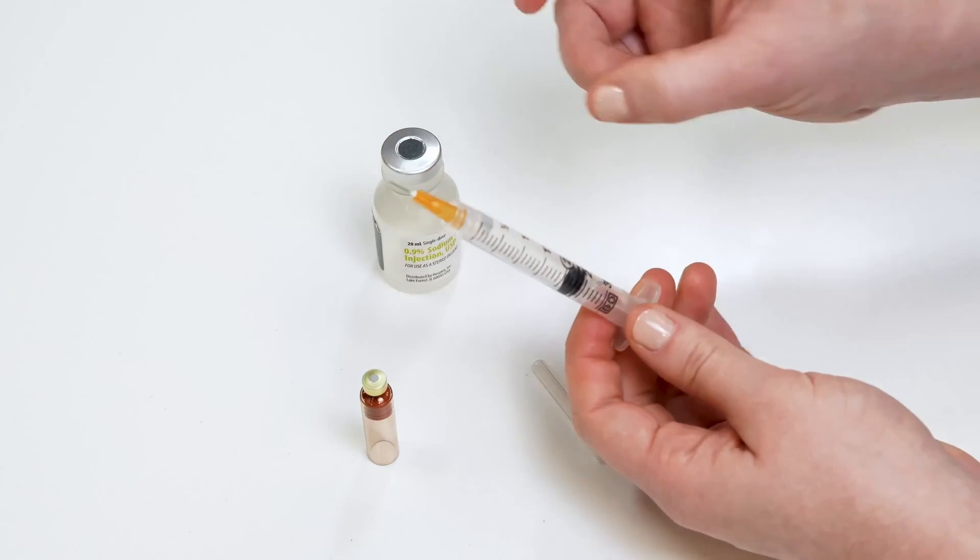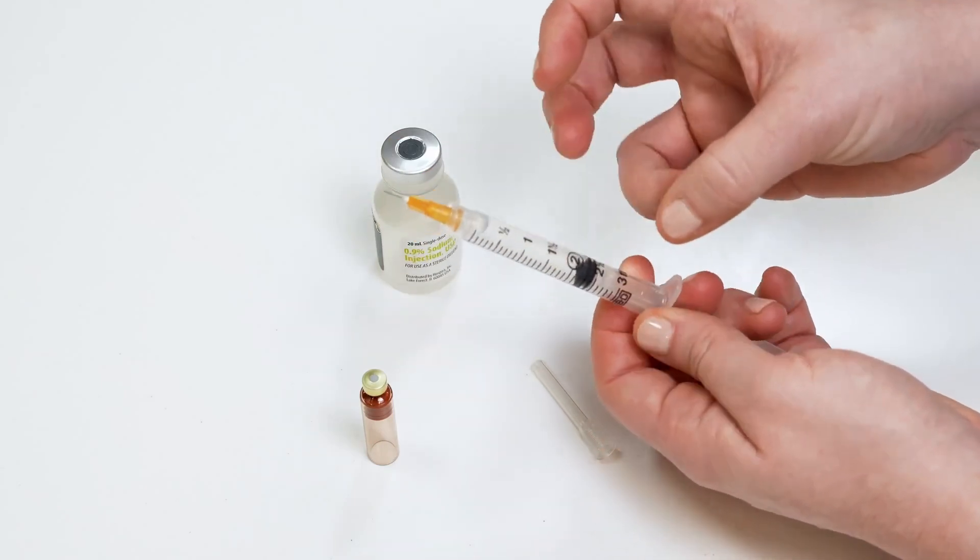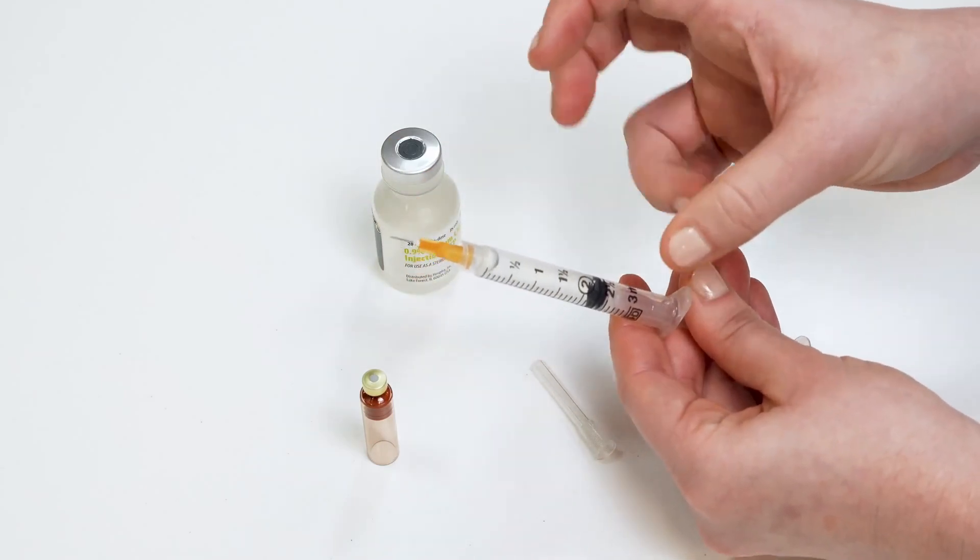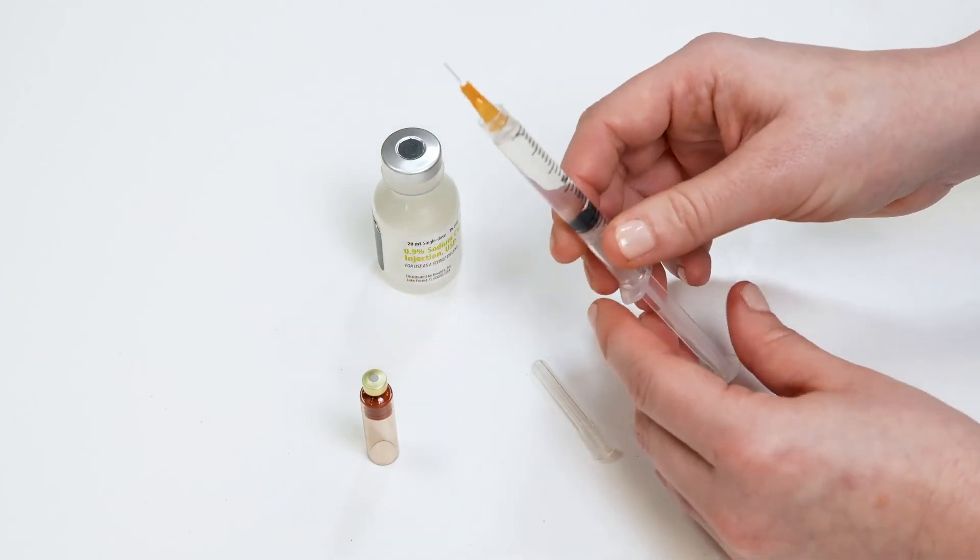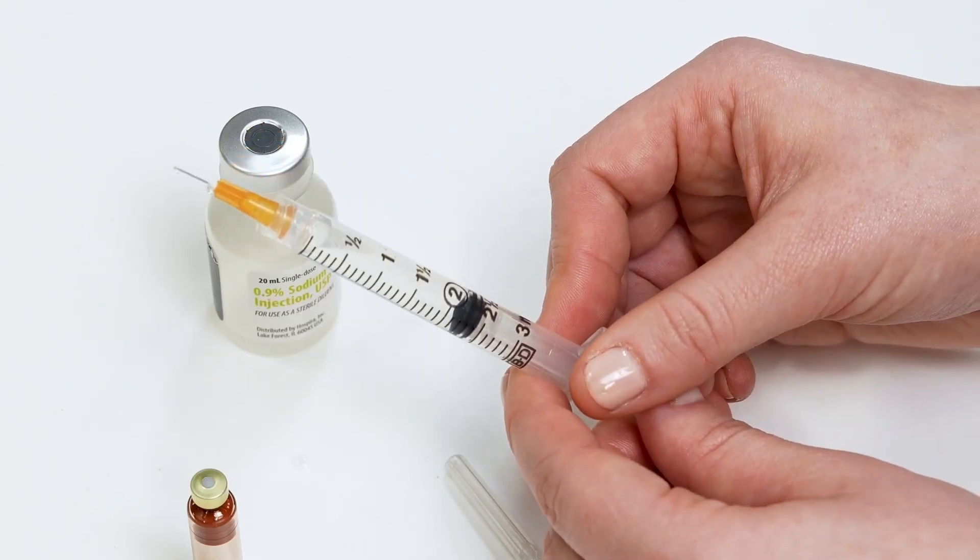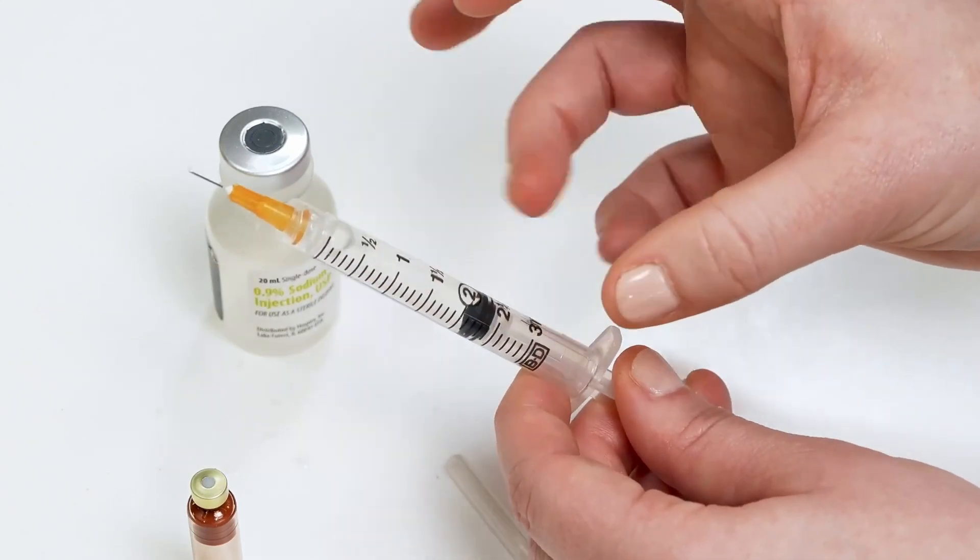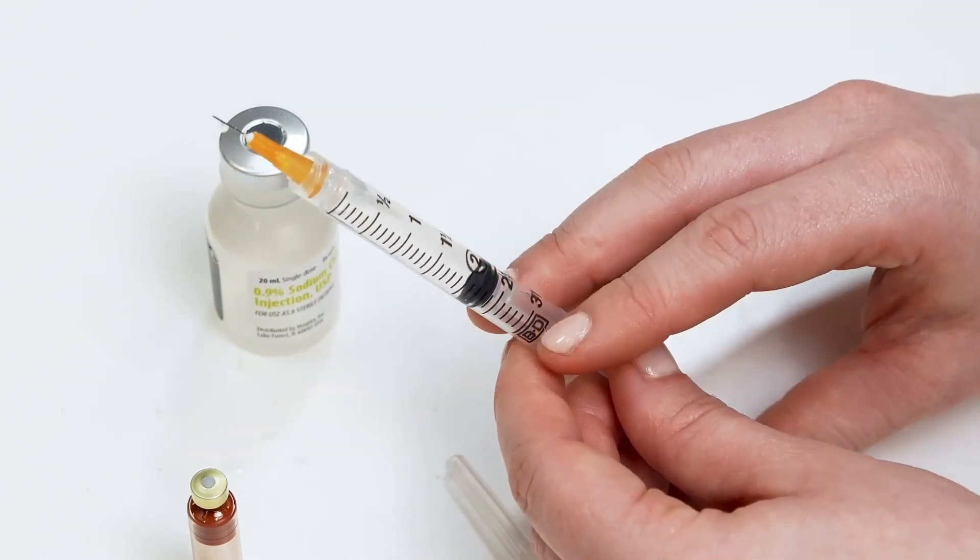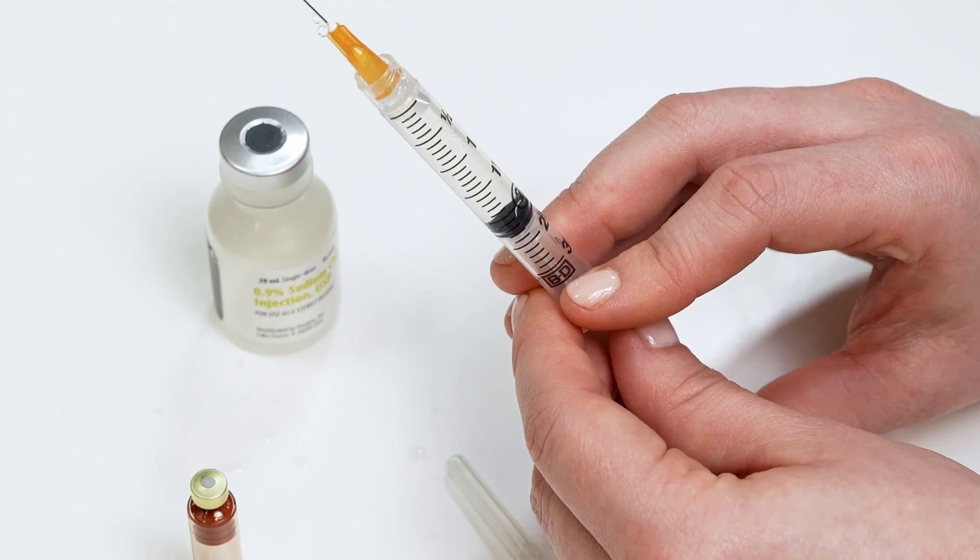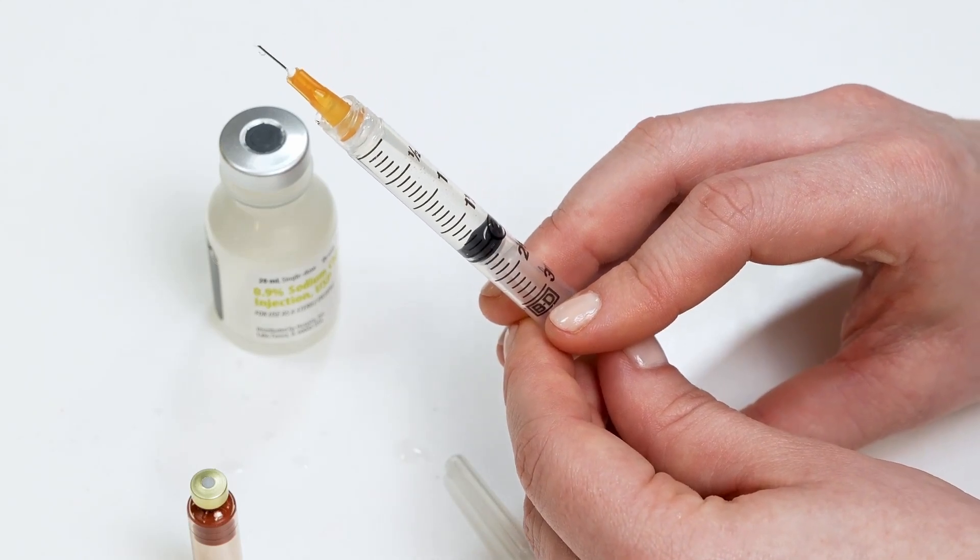Remove any air remaining in the syringe by flicking it with your finger and pushing on the syringe plunger rod to get rid of air bubbles. Pull back again as needed to fill the syringe to about 1.8 ml. When you have removed the bubbles from the syringe, you can now fill the islet cartridge.